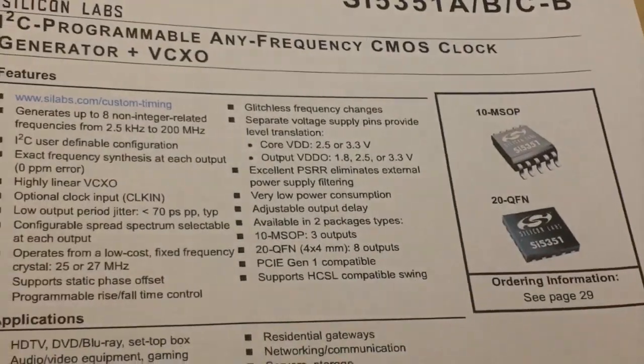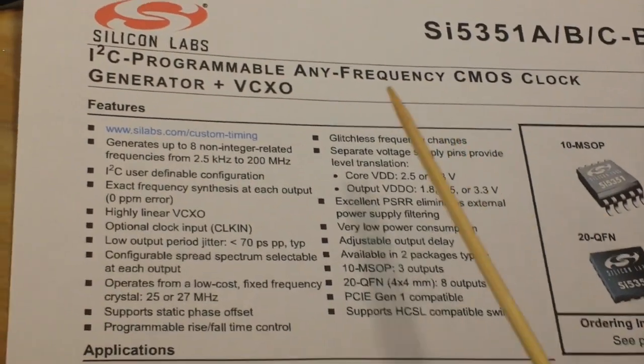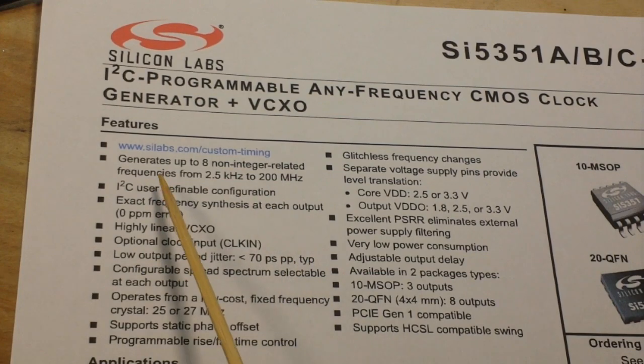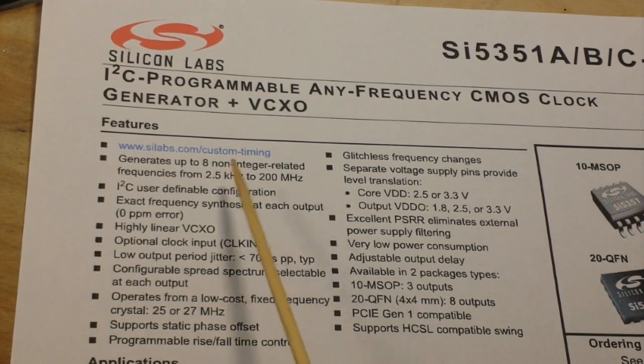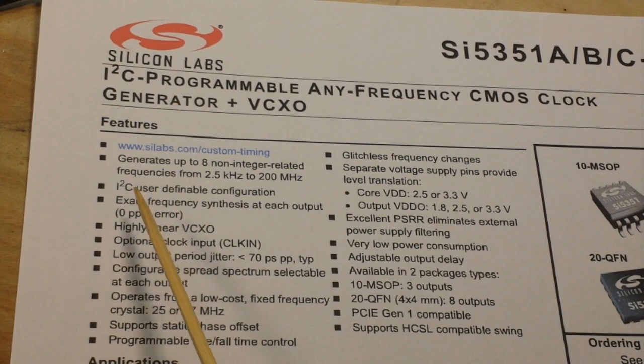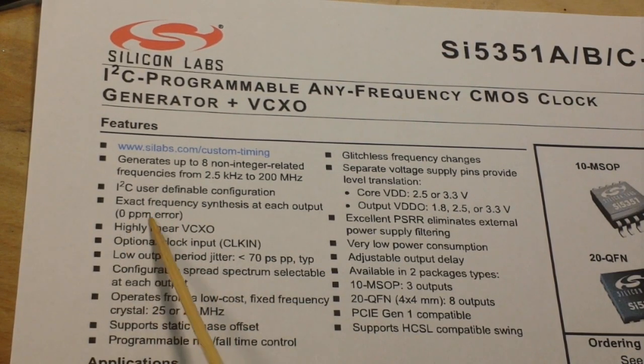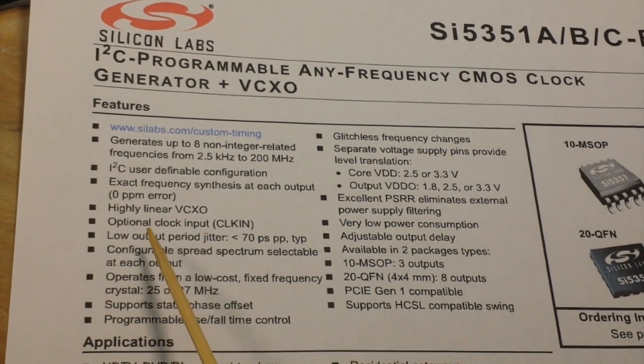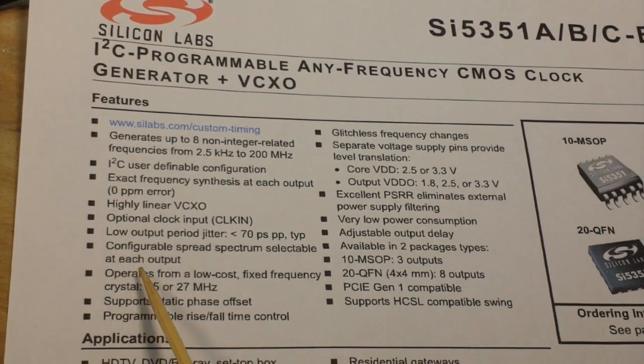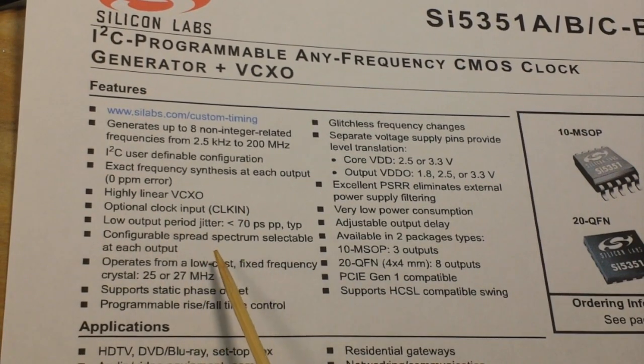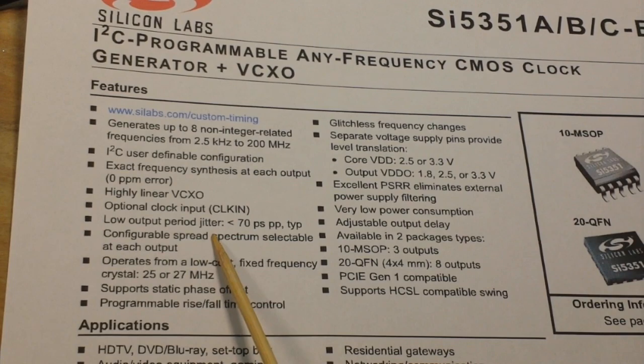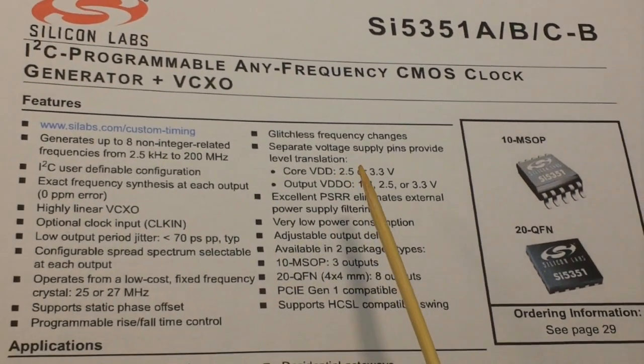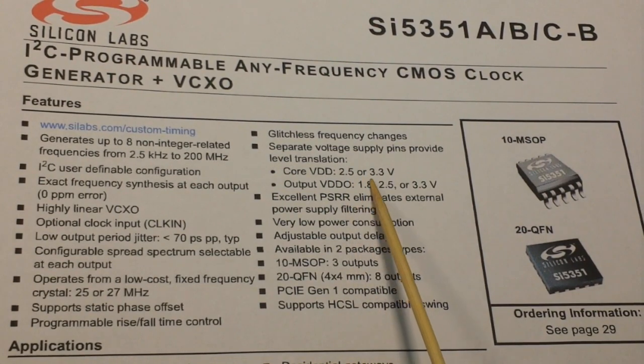This is from Silicon Labs and you can see it generates up to eight non-integer related frequencies from 2.5 to 200 megahertz I squared C exact frequency synthesis zero ppm error highly linear voltage controlled oscillator has an optional clock input low output jitter configurable spread spectrum selectable.